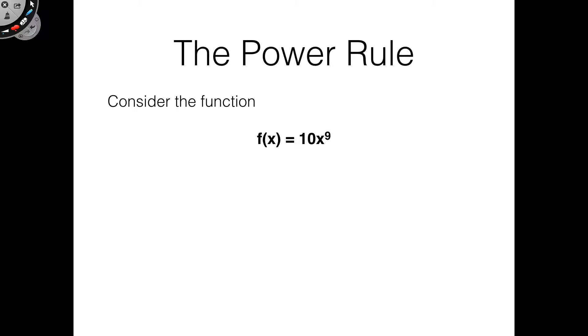So let's consider the function f(x) equals 10x to the 9th. This function would be a nightmare to calculate with the limit process, just because you have that x plus h to the 9th term, and that would just be a nightmare to foil out and cancel. So there's got to be an easier way, and that's what the power rule does.